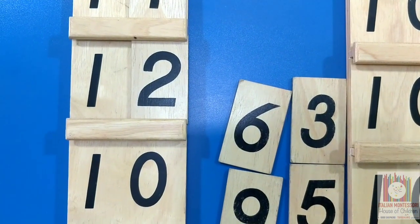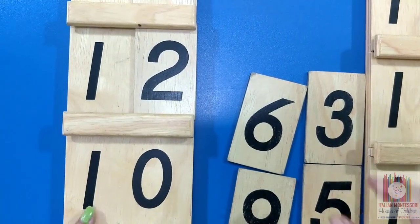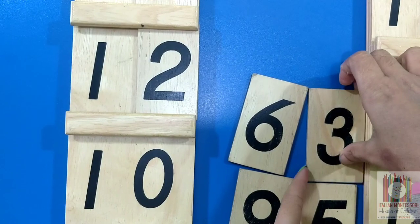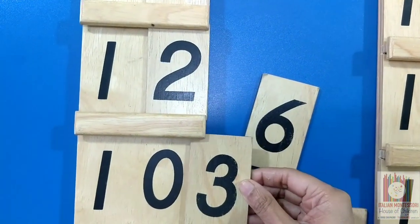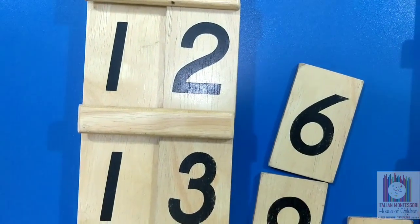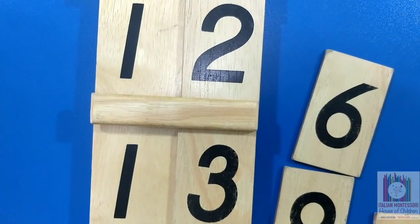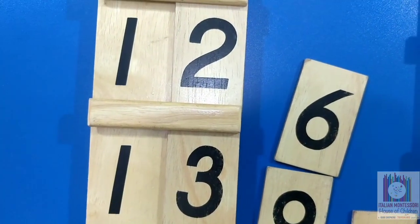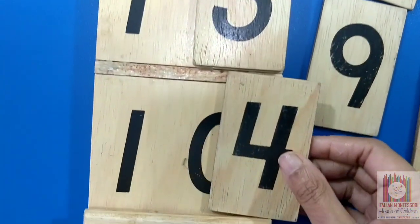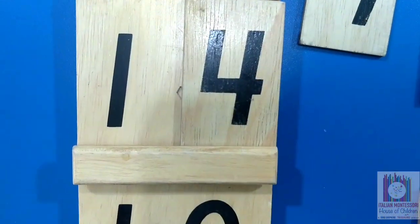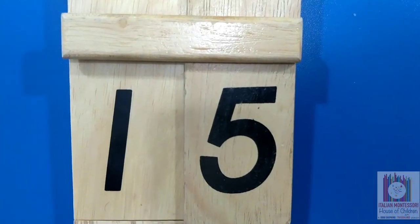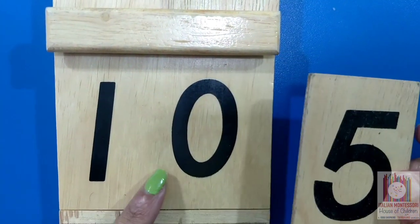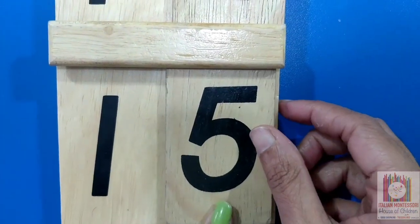Now let's see what shall we get when we put together 10 and 3 units. 10 and 3 units makes 13. 10 and 4 units makes 14. This is 15. We get 15 by combining 10 and 5 units together.